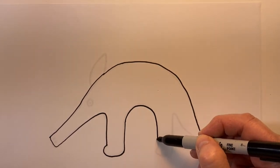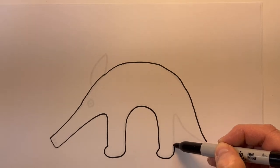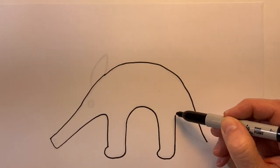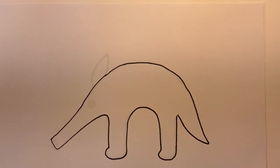The vertical line, and just little feet, little curved feet for the Anteater. And then a curved line to join the rest of the body to the end of the tail.